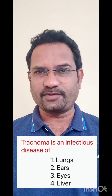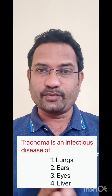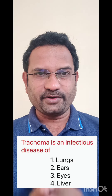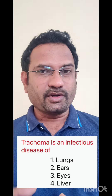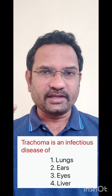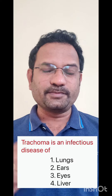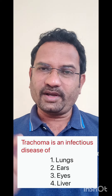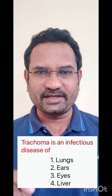Now the next question: trachoma is an infectious disease caused to which organ? Options are lungs, ears, eyes, and liver. I have already explained that trachoma is caused by Chlamydia trachomatis. It affects the eye. If not treated properly it may cause irreversible blindness. So trachoma affects the eyes — option number three is the right answer.